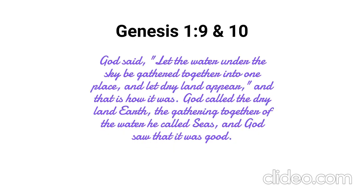God said, 'Let the water under the sky be gathered together into one place, and let dry land appear,' and that is how it was. God called the dry land earth, the gathering together of the water He called seas, and God saw that it was good. Not only did God create the waters but, as we see here, He controls them. At His word, the waters moved to expose land. The waters also obeyed when He told them to part and allowed His people to escape from Egypt. They also obeyed when God sent them in judgment of the inhabitants of Noah's day. Today, it seems that many people elevate nature and its forces above God, but, as we see here, God has always retained control over everything that He created. The forces of nature obey the words of God, and we would do well if we did the same.